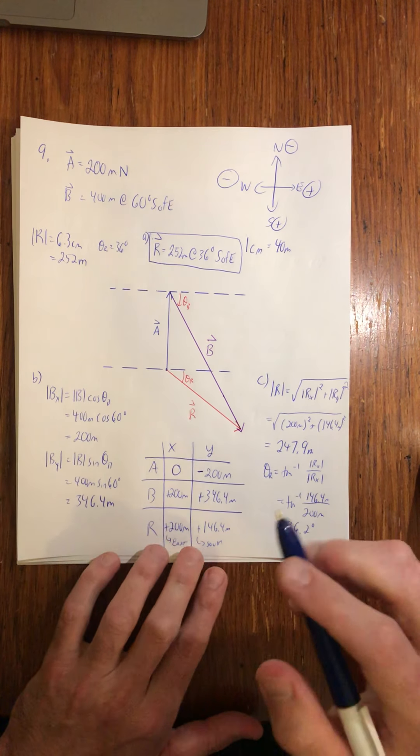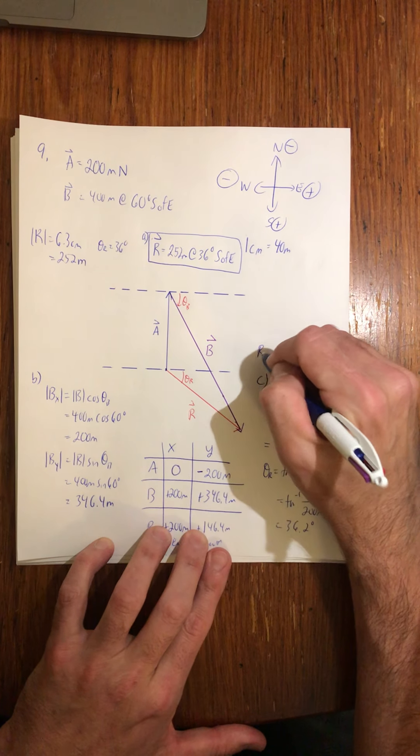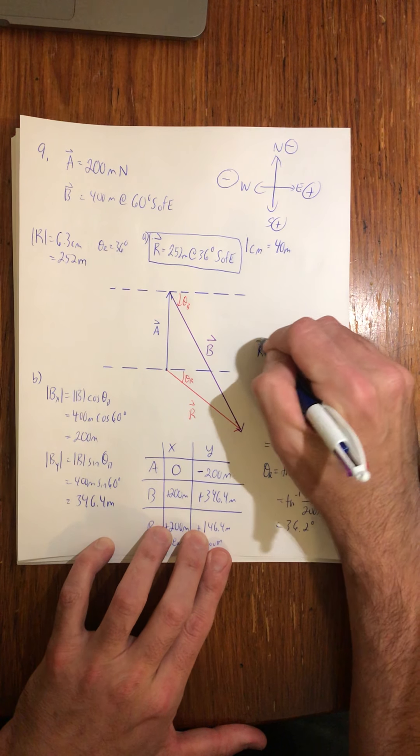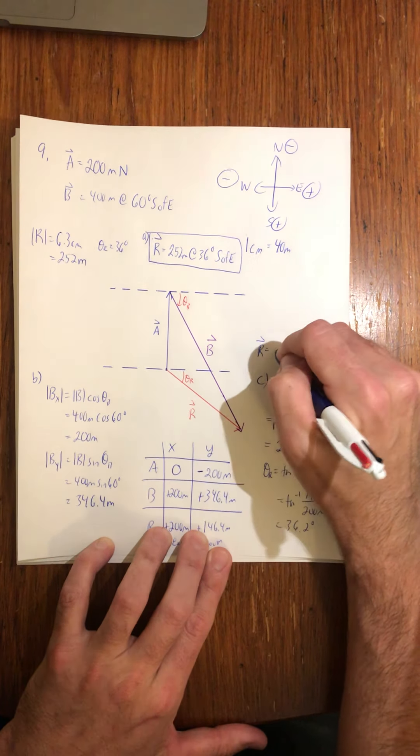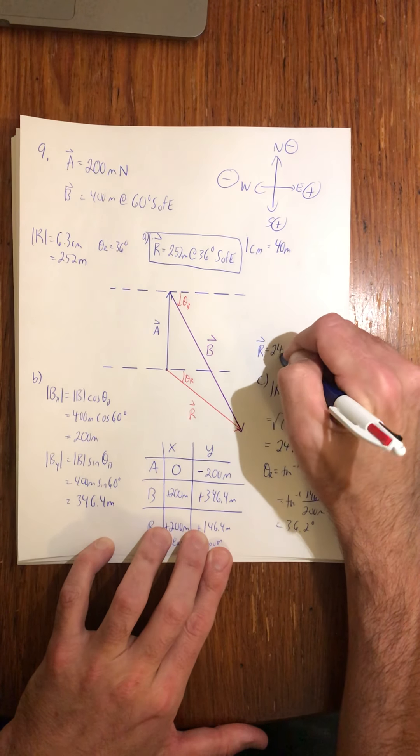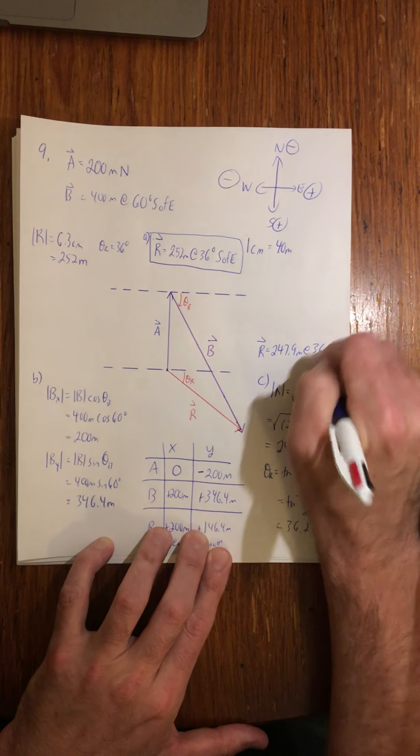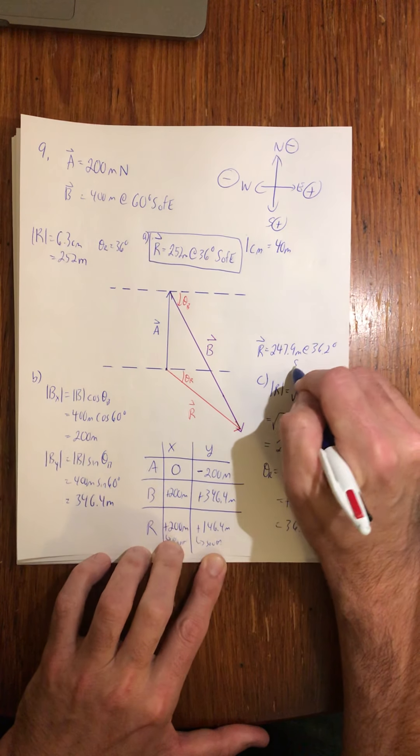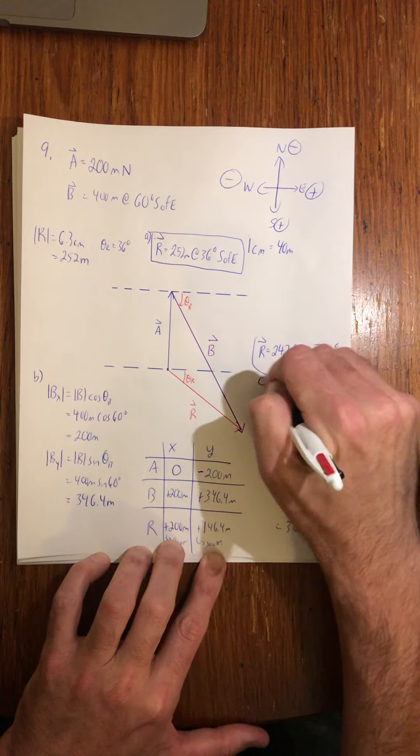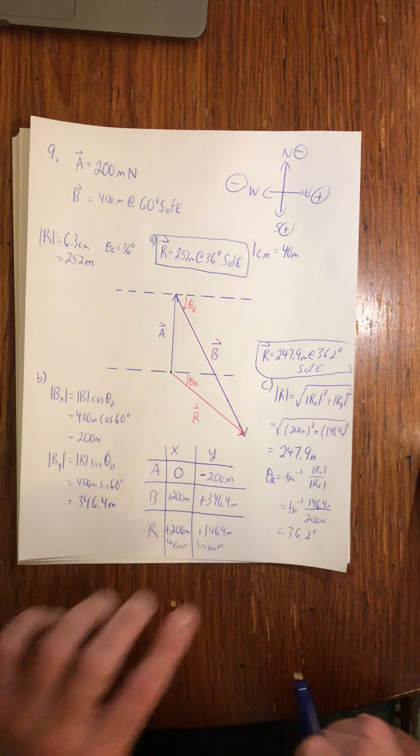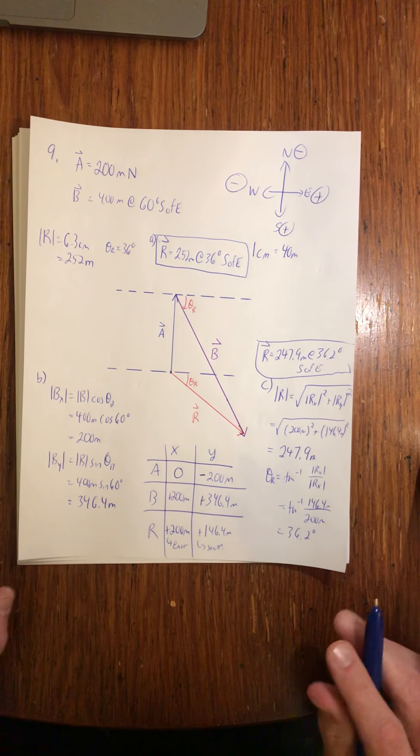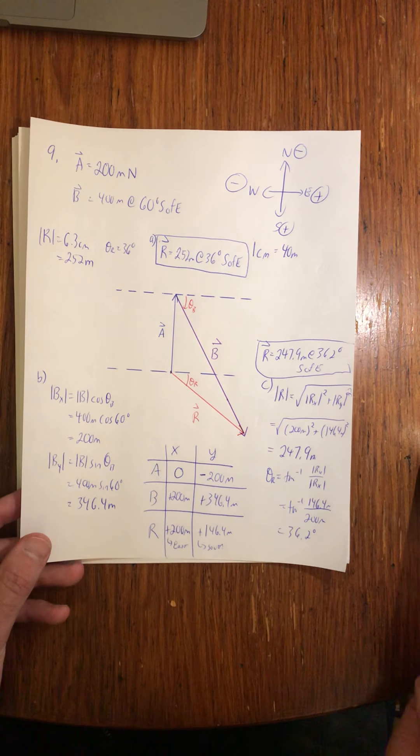That's pretty good compared to my 30. And so, there's my answer. My overall answer, then, is 247.9 meters at 36.2 degrees. And this is, indeed, south of east. South of east. Box it. And I'm golden. So, there we go. So, that's number 9.